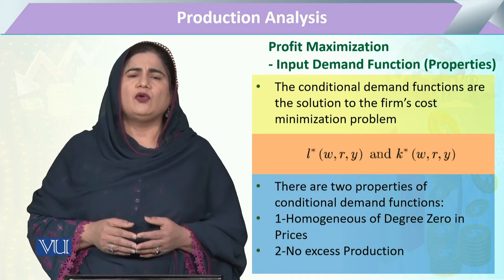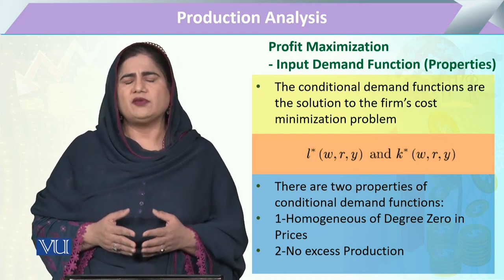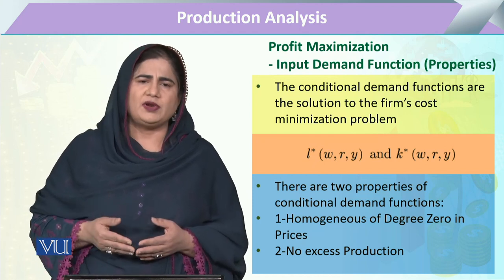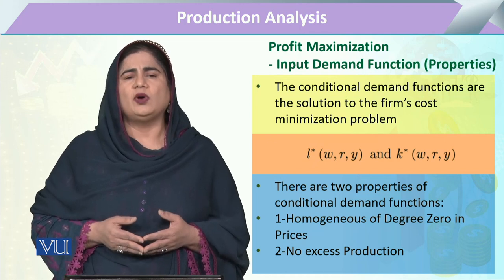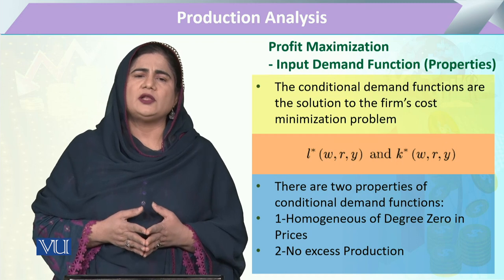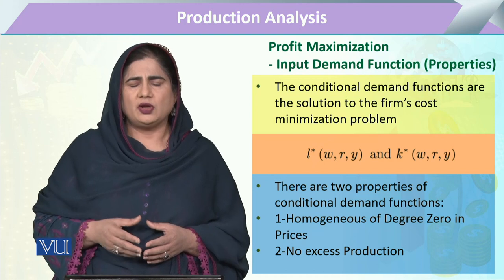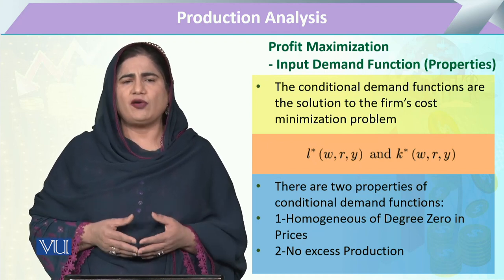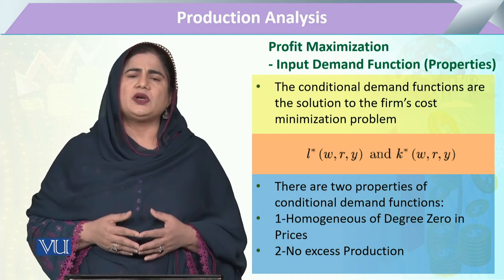The demand for labour or capital will depend upon their respective market prices prevailing in the economy. Demand for labour will depend upon the price of labour (W) and the price of the other input. It will also depend upon the amount of output. Since we talk about firm income, that will be conditional or constrained. Similarly, the demand for capital must be a function of the price of labour, price of capital, and the amount of output to be produced.